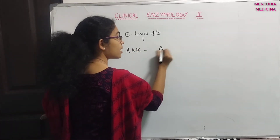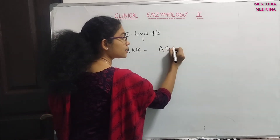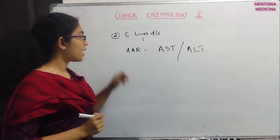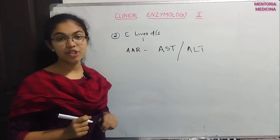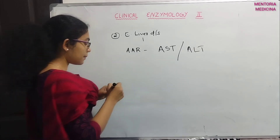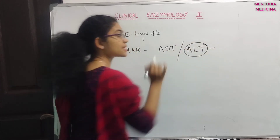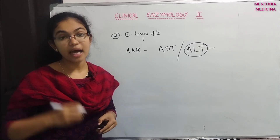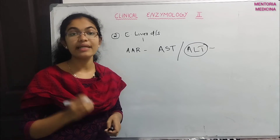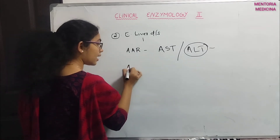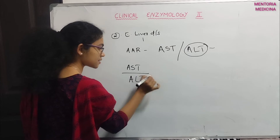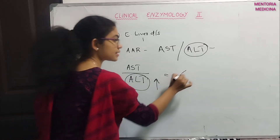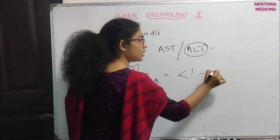The AST/ALT ratio — that is the aspartate aminotransferase to alanine aminotransferase ratio. When this ratio is less than 1, it indicates liver disease.